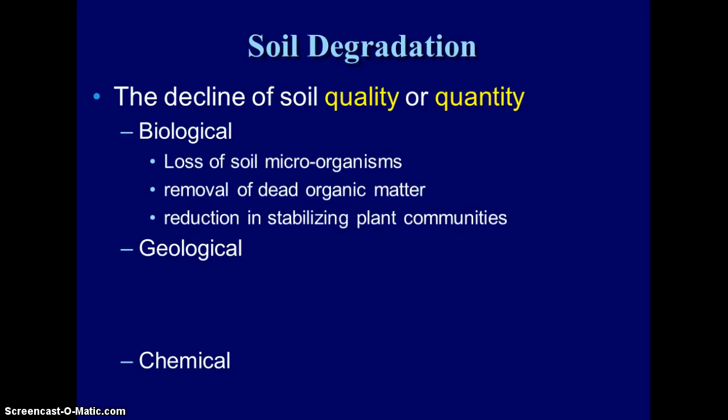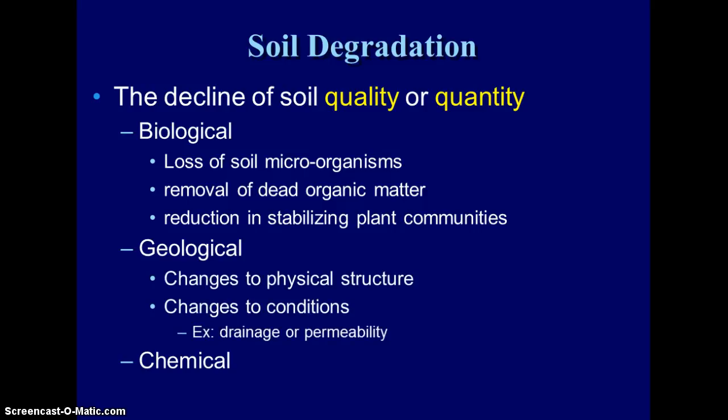Biological degradation is when we're losing organic matter, losing the microorganisms that drive our matter cycles like the nitrogen cycle. We're also losing plants — the stabilizing plants that have roots to keep the soil from eroding. Geological is any time we change the physical structure, such as changes in drainage or how permeable the soil is.